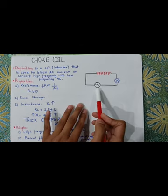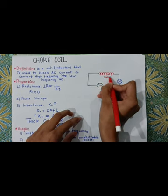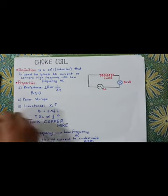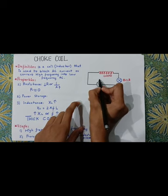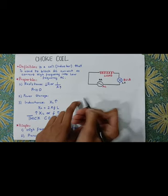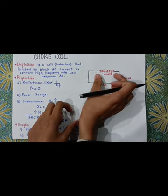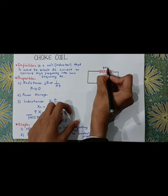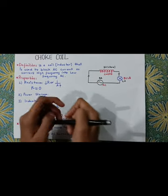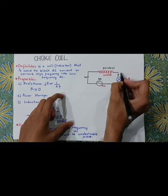Here we have an AC source connected to a choke coil. When current flows through the circuit, the choke coil reduces the current — for example, a current of 4 amperes is reduced down to 1 ampere through the action of the choke coil.